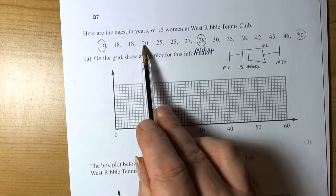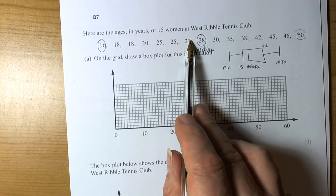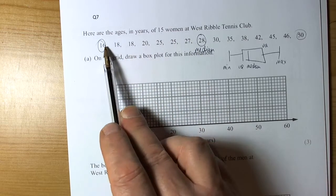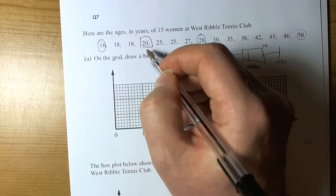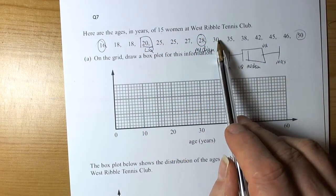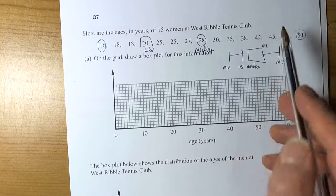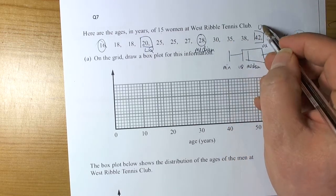And we've got 7 data points below the middle and if we add one to that 8 and a half at 4, so the 4th data point will be the quarter way, so 1, 2, 3, 4. So that will be the lower quartile value and then the 4th data point in the upper half, so 1, 2, 3, 4, and that will be the upper quartile value.